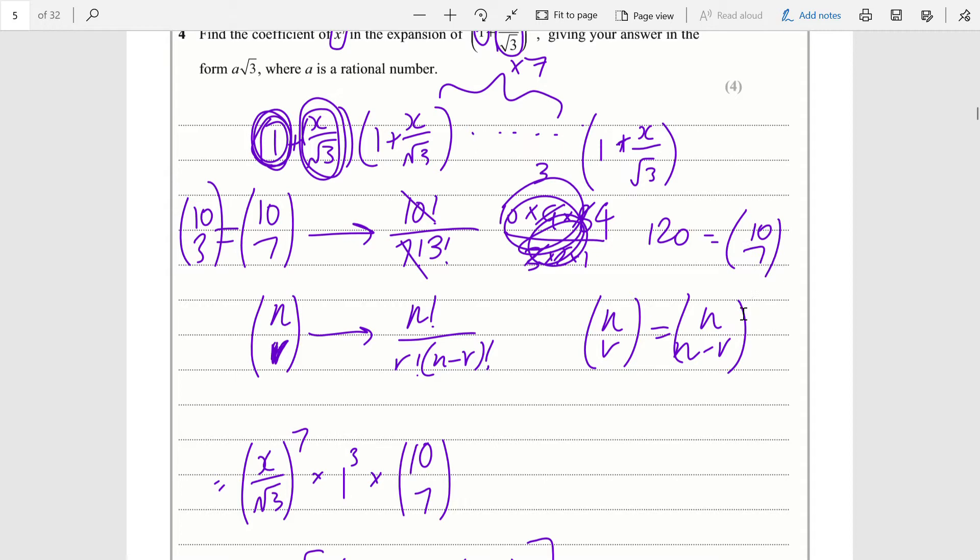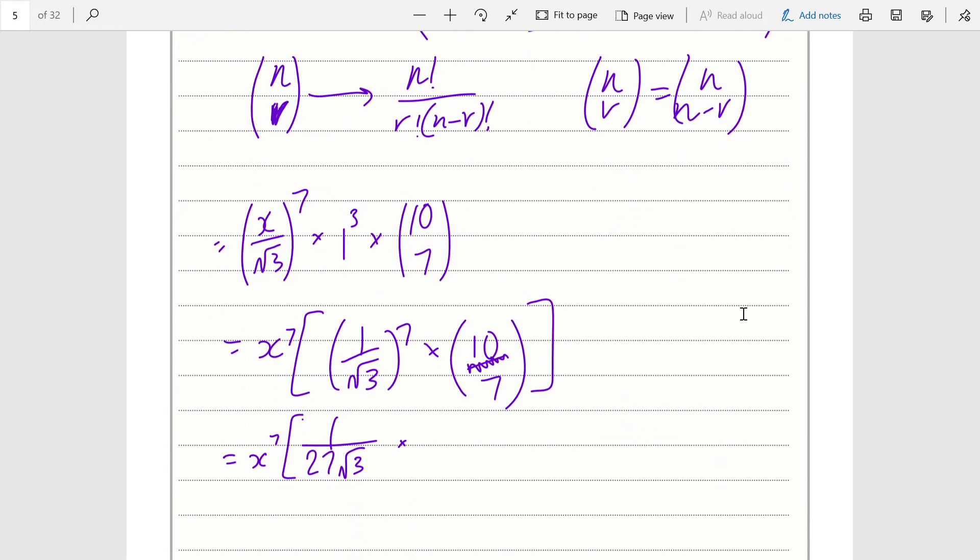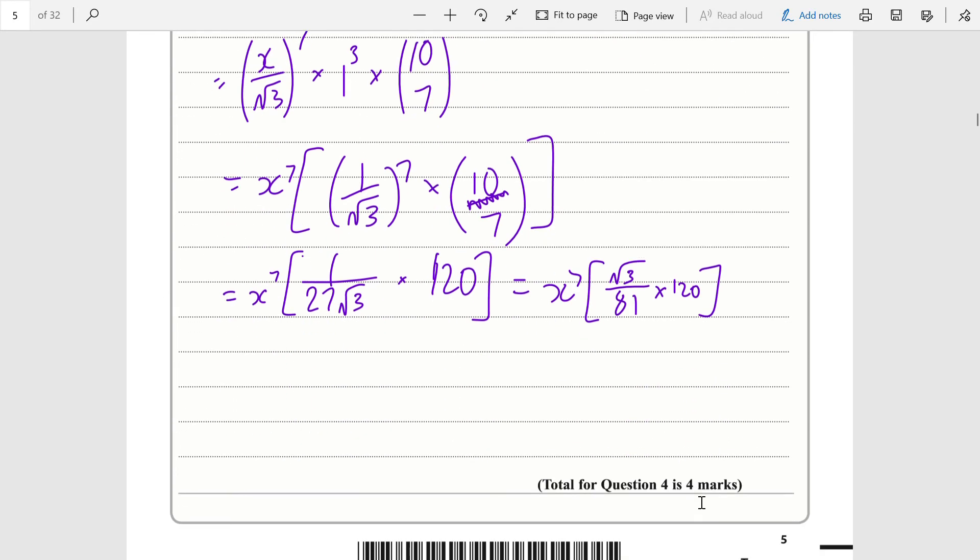So we have 1 over 27 root 3 times 120. You rationalize it by multiplying by root 3 over 3 to get 1 over 81, with root 3 on top. So you have root 3 divided by 81 multiplied by 120. Of course, 120 is divisible by 3, so the 120 and 81 cancel.